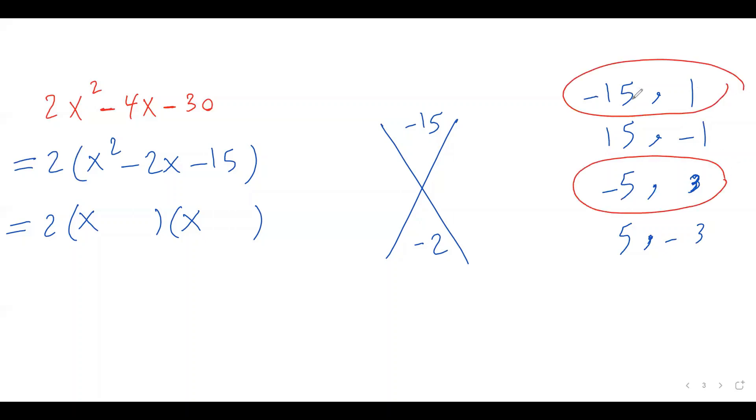Which one works? The first one doesn't work because negative 15 plus 1, that's negative 14. Negative 5 plus 3, that gives me negative 2. So, this one works. And negative 5 times 3, obviously, is negative 15. This one works. Those are my two numbers.